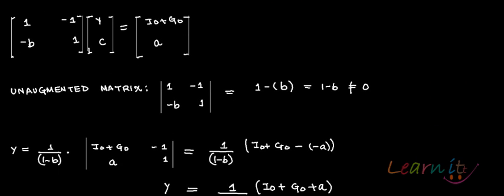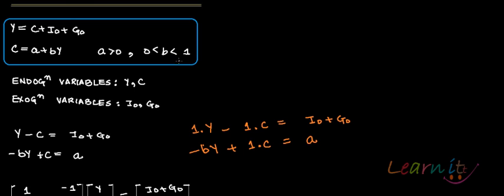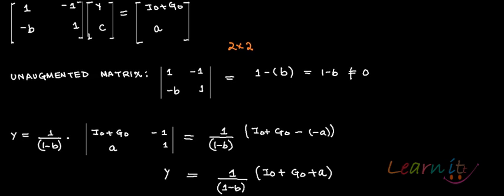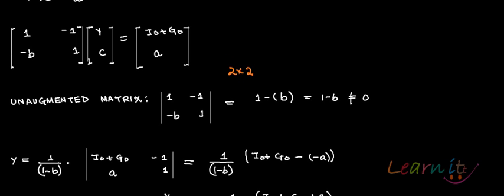To apply Cramer's rule, we check that the unaugmented coefficient matrix [1, −1; −b, 1] is a square matrix — it is a 2×2 matrix. We then calculate its determinant, which is 1·1 − (−1)(−b) = 1 − b. Since b lies strictly between 0 and 1, it is not exactly equal to 1, so the determinant is not equal to zero. Hence this matrix is invertible and we can solve the system using Cramer's rule.